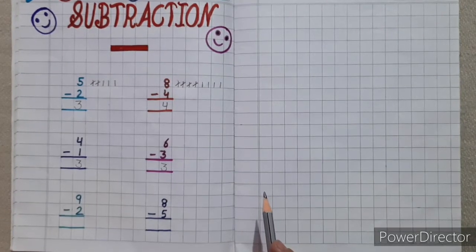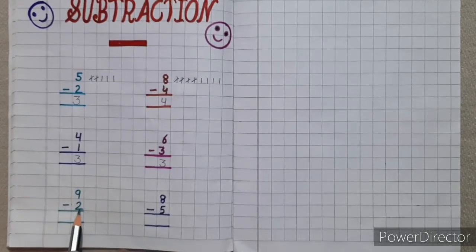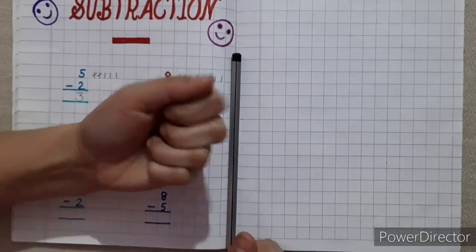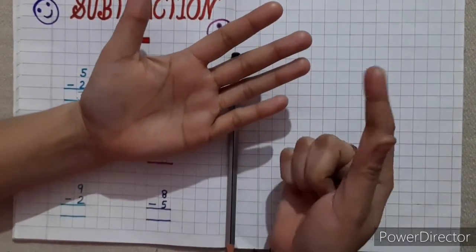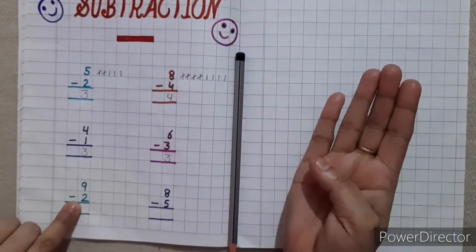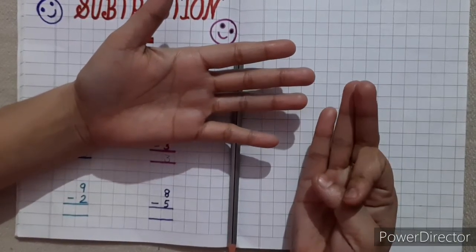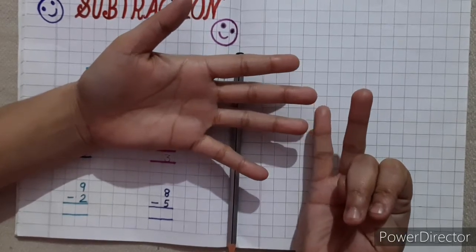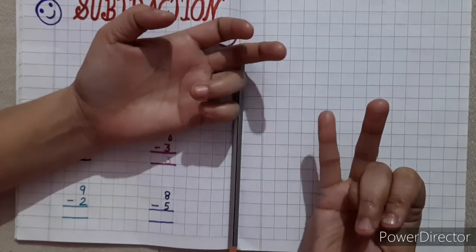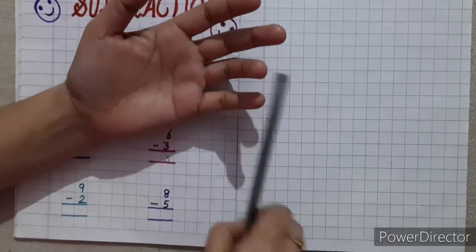Next method is the finger method. This is nine minus two. So put nine fingers up: five, six, seven, eight, nine. This is minus two, so put down two fingers: one, two. Now kids, tell me how many fingers are left? One, two, three, four, five, six, seven — so seven is the right answer. Write seven here.